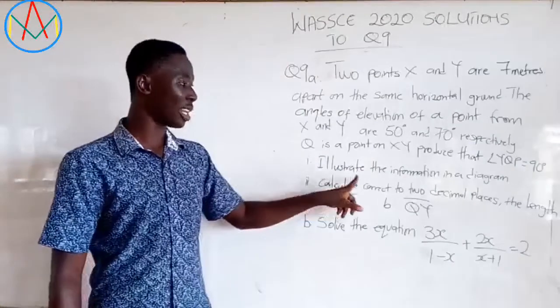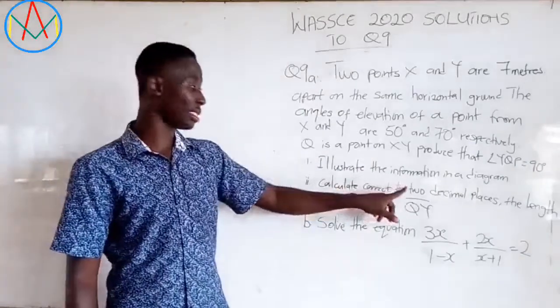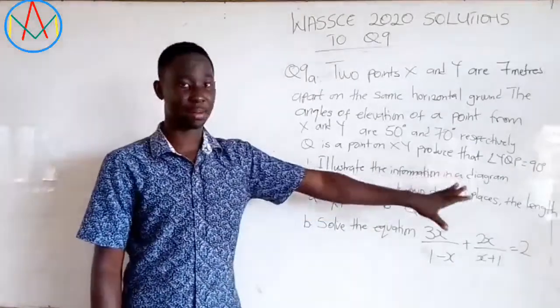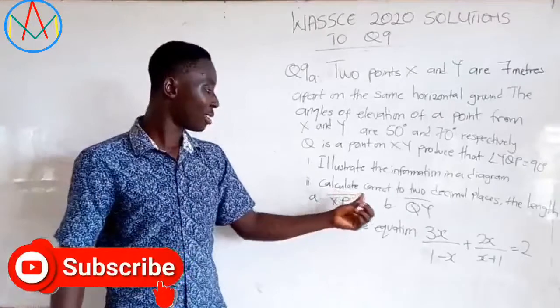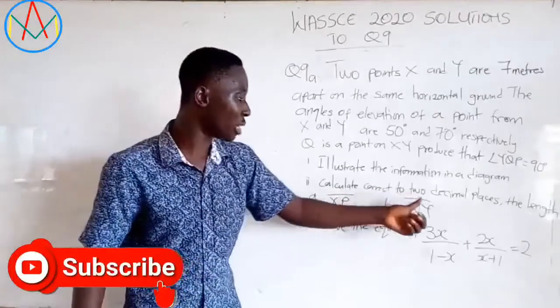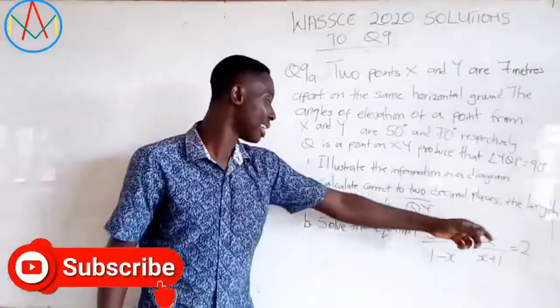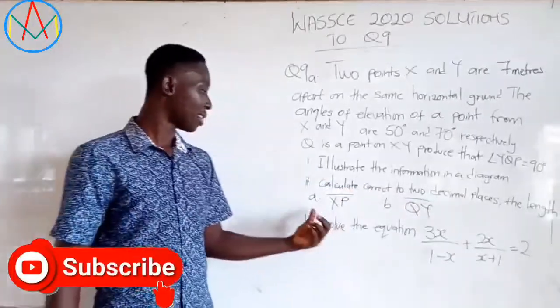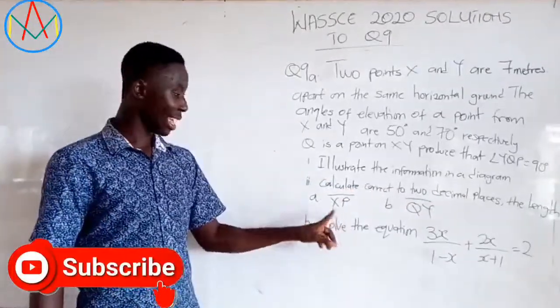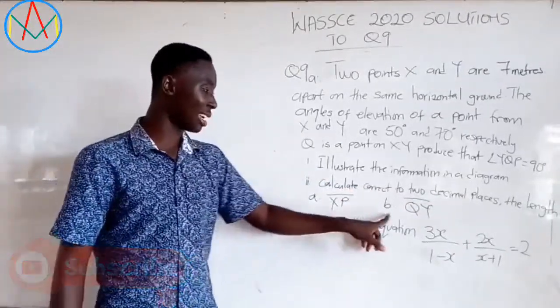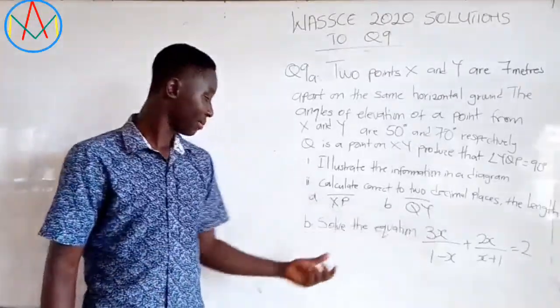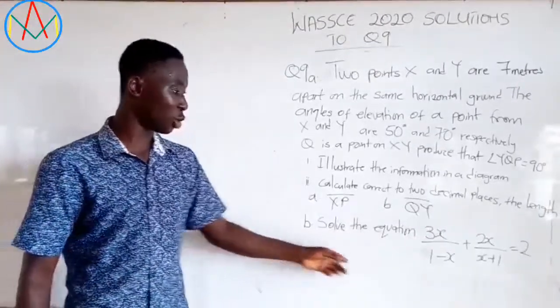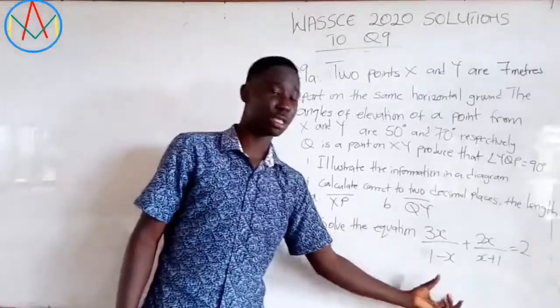We are to illustrate the information in a diagram. We are to find, correct to 2 decimal places, the length of: (a) XP, and (b) KY. And we are to solve this equation. So now let's start.